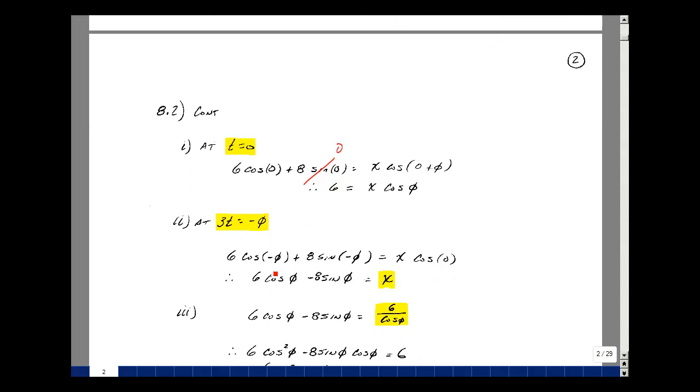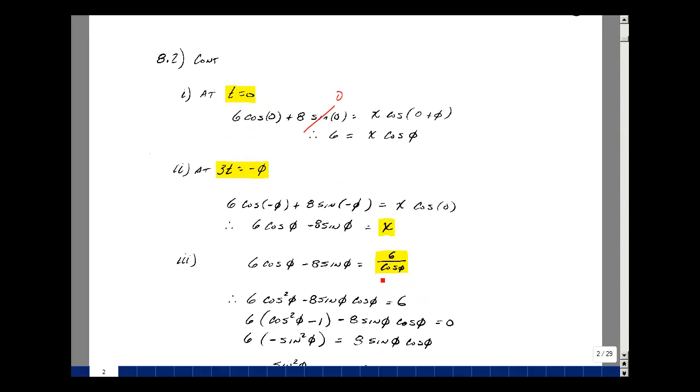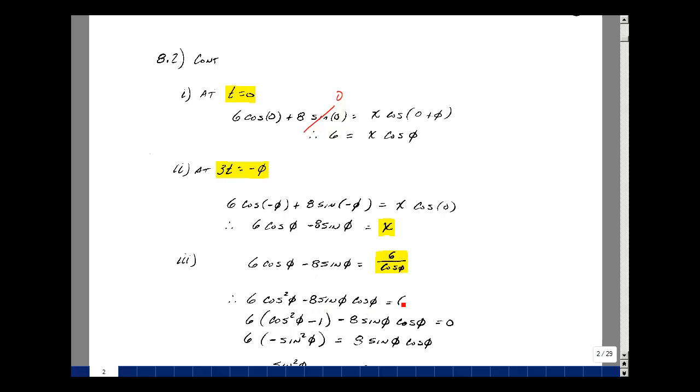Cosine of minus phi is just cosine of phi because cosine is an even function, and sine of minus phi is minus sine of phi because it's an odd function. I know x is 6 divided by cosine of phi, so I can multiply across. I've got 6 cosine of phi squared minus 8 sine of phi cosine of phi equal to 6. Bring the 6 to this side as minus 6. Cosine squared plus sine squared equals 1, so cosine squared minus 1 is minus sine squared of phi.